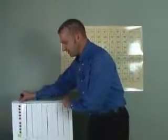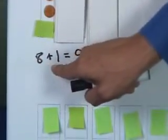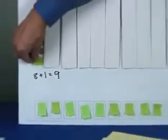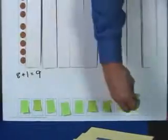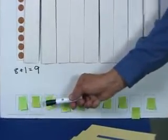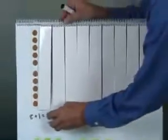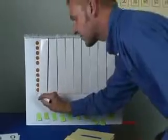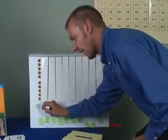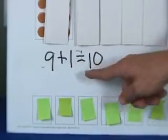Very good, boys and girls. Let's take a look at our money flip chart. What number did we have yesterday? We had the number nine. Nine is equal to eight plus one. If I take off this green tab, will I make a new ten? How do you know we'll make a new ten? Let's count: one, two, three, four, five, six, seven, eight, nine, ten. Let's write an equation here. What did we start out with yesterday? Nine. How many pennies did we add today? One. Nine plus one equals ten.